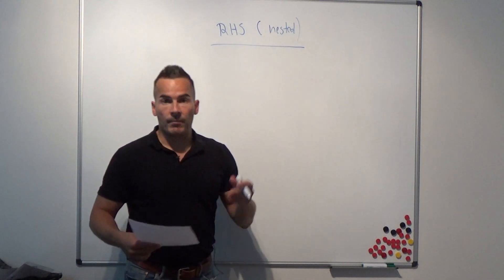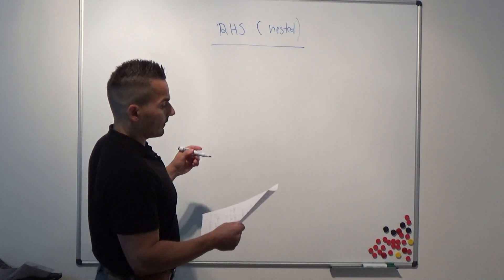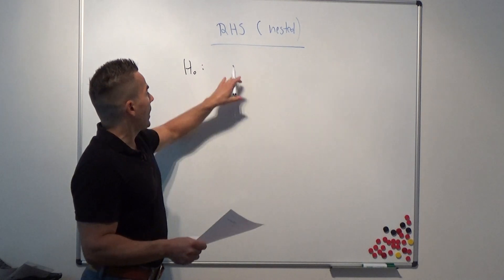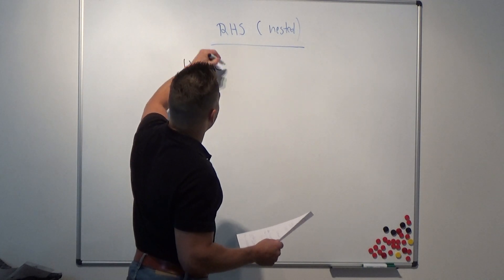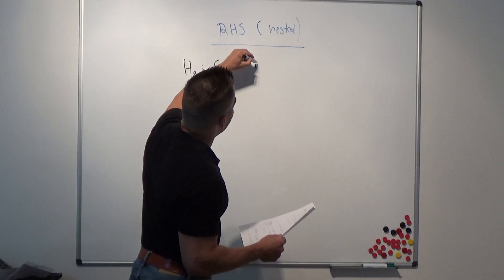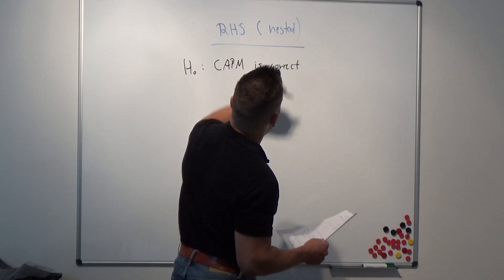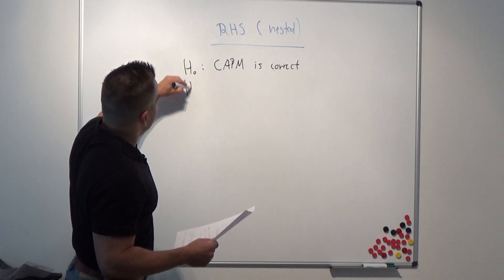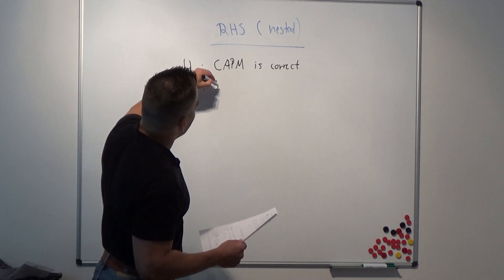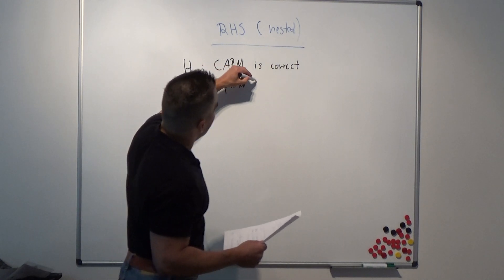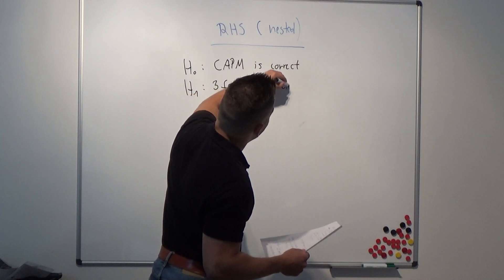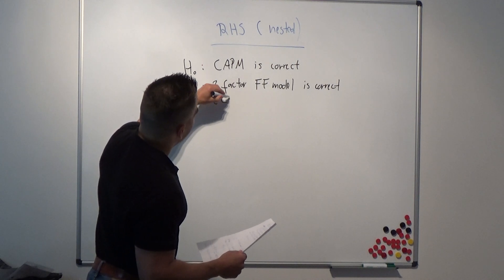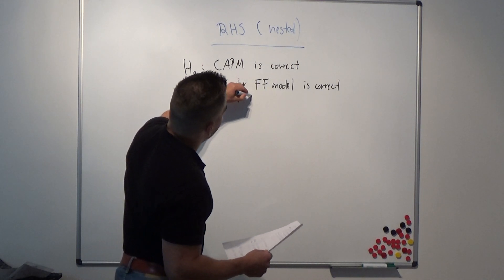Let's say we want to test the CAPM against the Fama-French three-factor model. Under the null hypothesis, because the CAPM is nested in the three-factor model, we say the CAPM — the model that is nested — is correct. Under the alternative hypothesis H1, we say the three-factor Fama-French model is correct, which implies the CAPM is not correct.